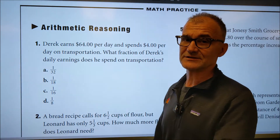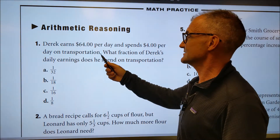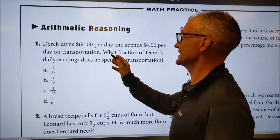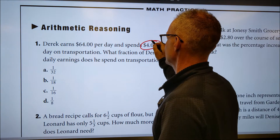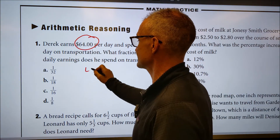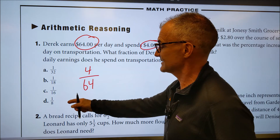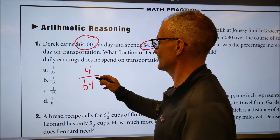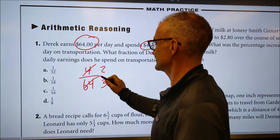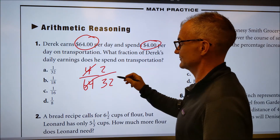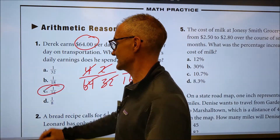Problem number one — pause the video, do the problem, then I'll do it. This is from chapter two, fractions. Derek earns $64 per day and spends $4 a day on transport. What fraction of his earnings does he spend on transport? We're comparing transport costs to total earnings — that's a fraction of 4 to 64. I reduce: four divided by two is two, 64 divided by two is 32. Two divided by two is one, 32 divided by two is 16. The answer is 1/16.